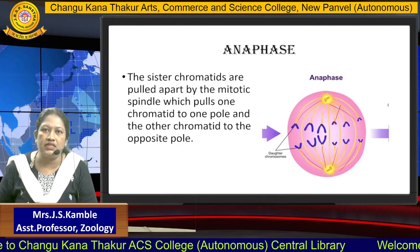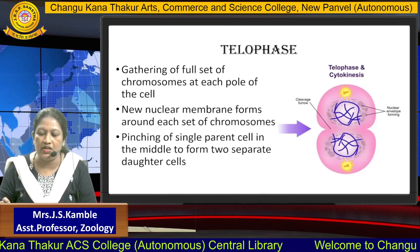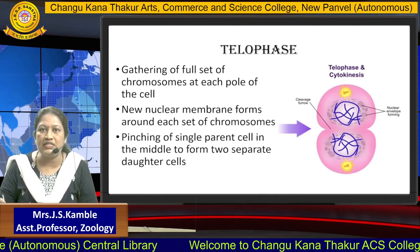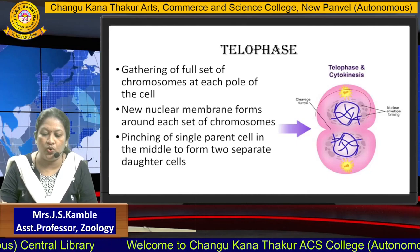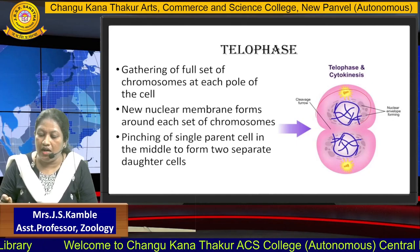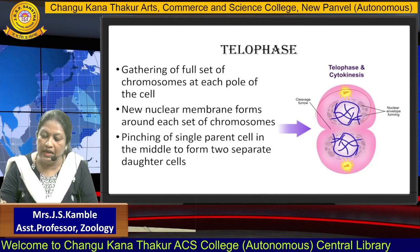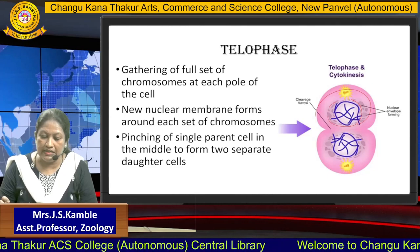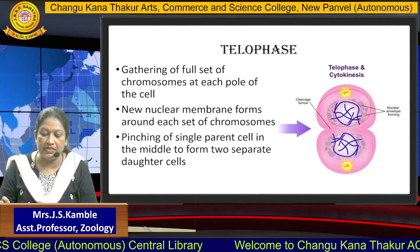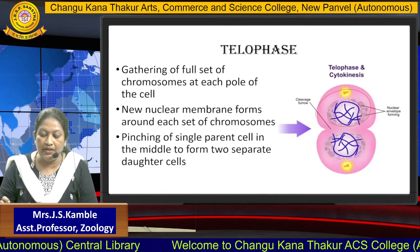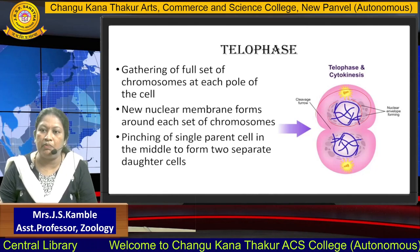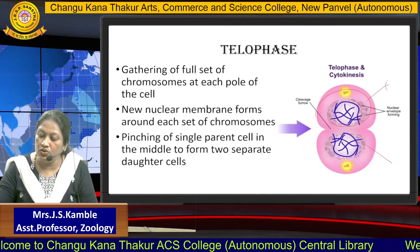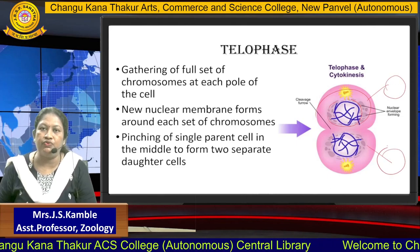After anaphase, the cell goes to the next stage called telophase. In telophase, the gathering of the full set of chromosomes at each pole of the cell is carried out. Also, a new nuclear membrane is formed around each set of chromosomes. Simultaneously, pinching of the single parent cell in the middle is initiated so that the two daughter cells can be separated, and two separate daughter cells are subsequently formed.